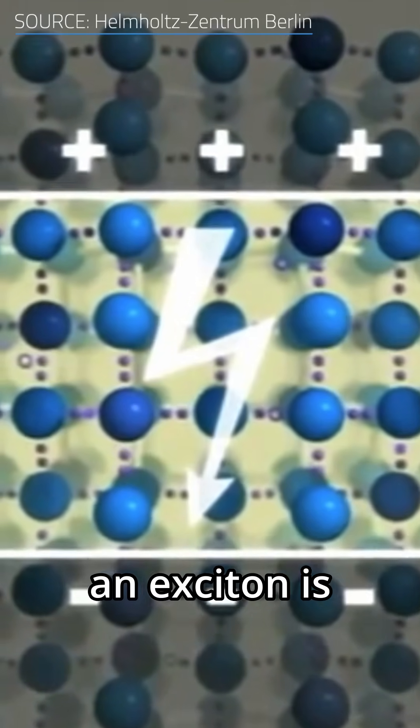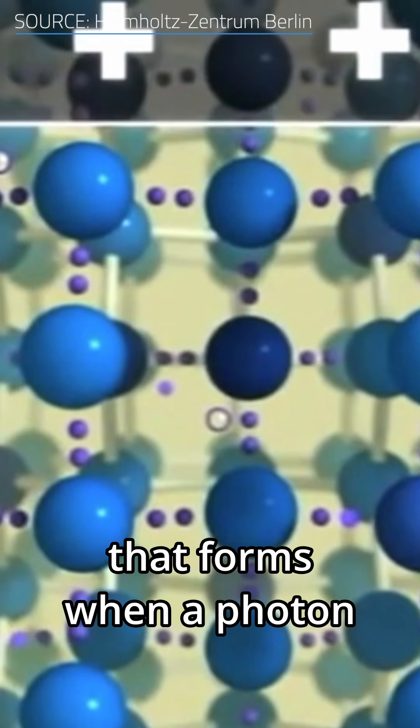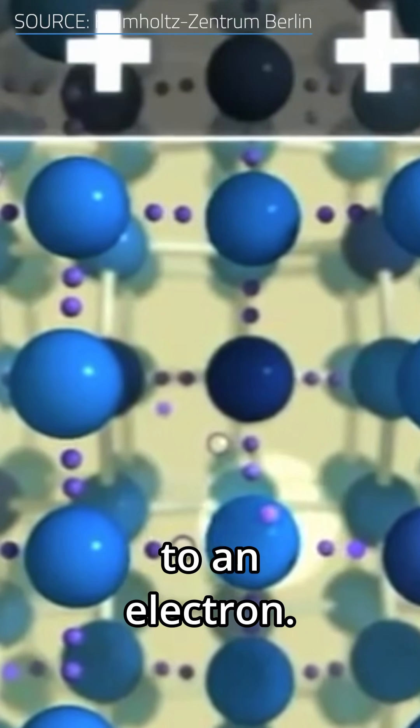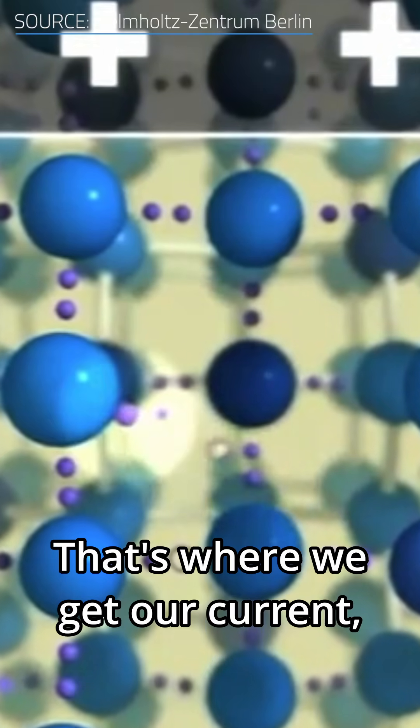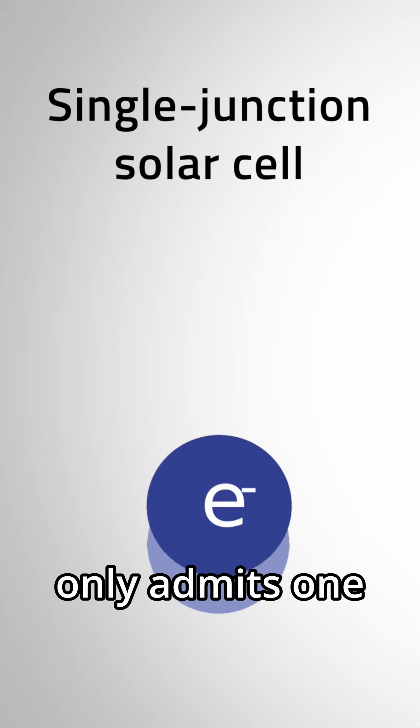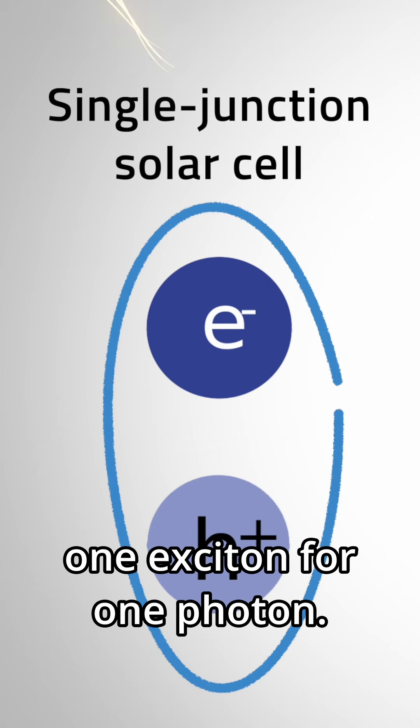In your average PV panel, an exciton is an electron-hole pair that forms when a photon radiating from the sun transfers its energy to an electron. That's where we get our current, so we want as many excitons as we can get. However, that ticket only admits one — one exciton for one photon.